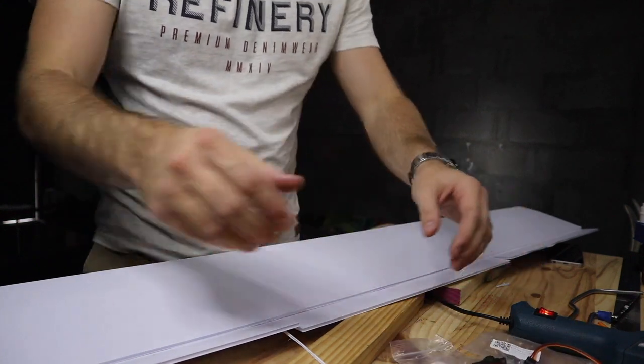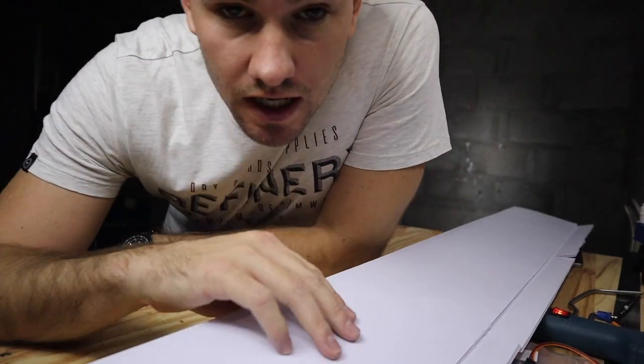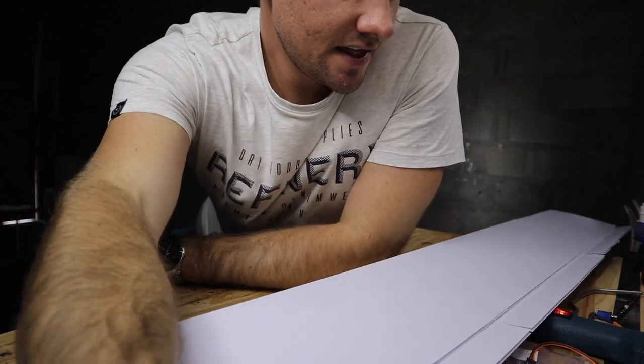That's it, so that's pretty much how to make a very simple corex wing for an RC aircraft, 120 centimeters wingspan by about 20 centimeters wing chord. Hope you enjoyed the video. If you did please like it and I'll be uploading similar videos in the future. Hope to see you soon.